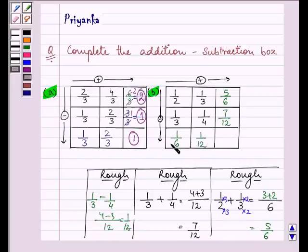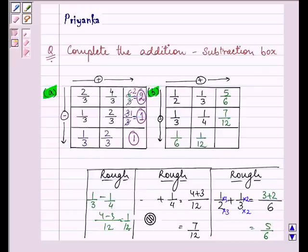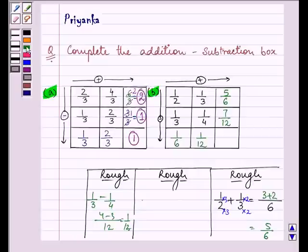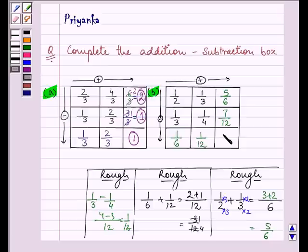Now what we need to do, we need to find out this. We have the fractions. Let us add them in our rough column only. 1 by 6 plus 1 by 12. LCM is 12. We have 2 plus 1 in the numerator. 3 by 12. On canceling out we have 1 by 4.